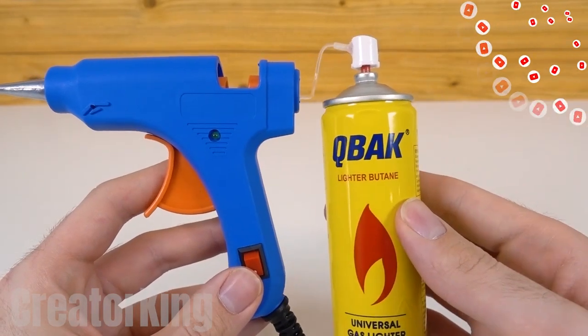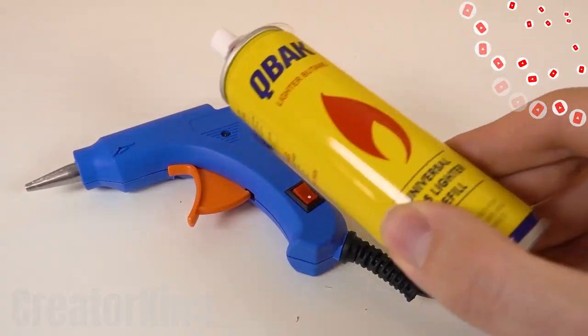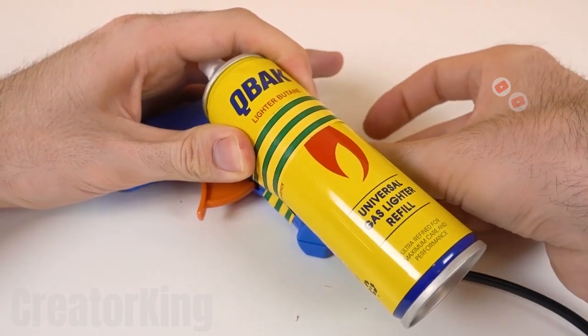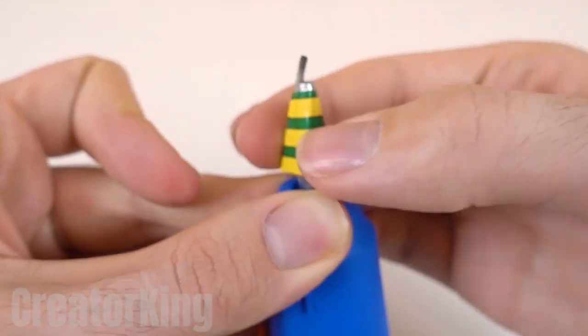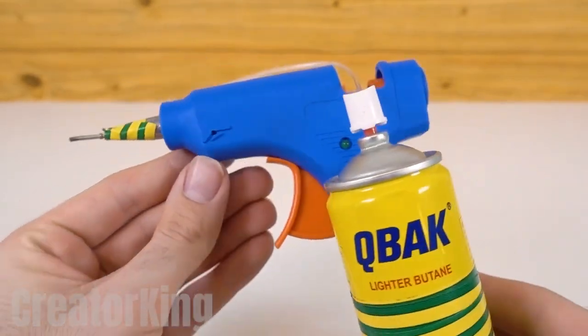For convenience, attach the butane canister to the side of the invention with a few rounds of adhesive tape. Also, add a piece of tape to the gas outlet to prevent the flame from moving uncontrollably and igniting the entire room.